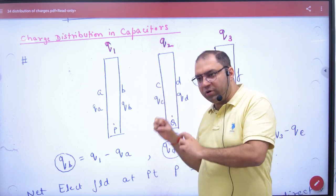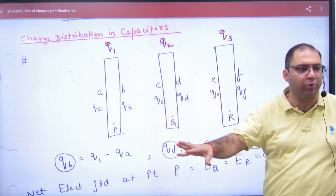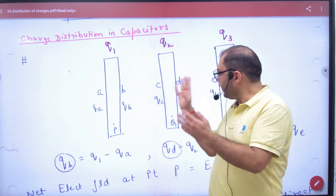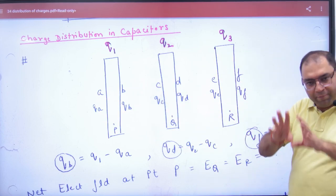Positive charge will attract negative, then there will be induction. So this charge will distribute here and here, here and here, here and here. It will distribute.